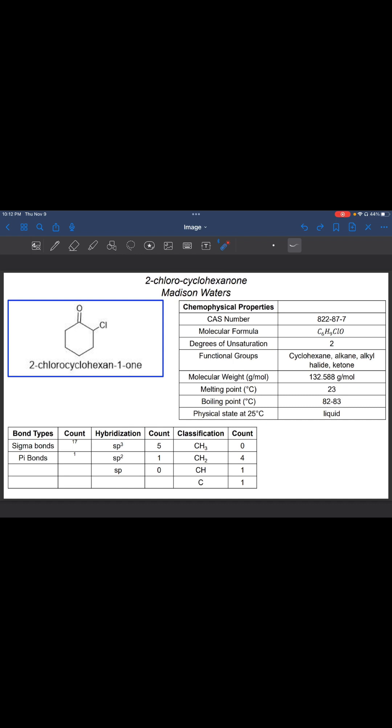The hydrogens of the carbons in the ring, five of them are going to be sp3, because they all have single bonds. The sp2 is a double bonded carbon.